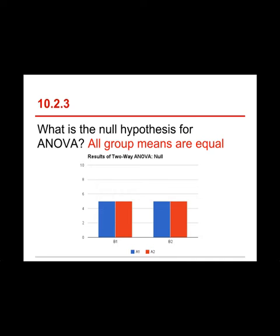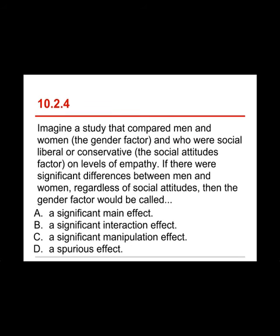Here's a chart from the lecture showing two factors, each with two levels — two categorical variables with two categories each. In this case the mean is identical for all four groups, which represents the null situation for an analysis of variance.